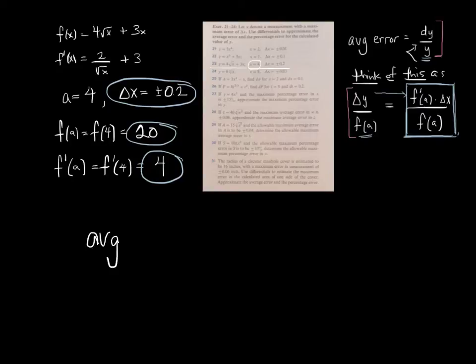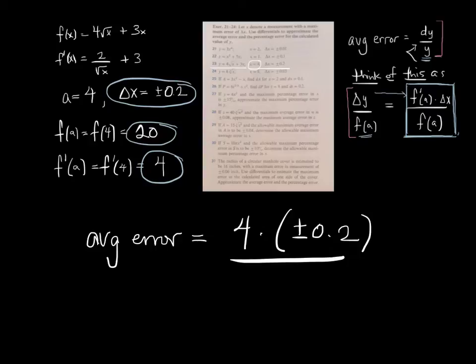Average error then. 4 times plus minus 0.2. Whoops. I'm getting ahead of myself. My brain did the multiplication. Anyway, 4 times plus minus 0.2. All of that divided by f of a, which is 20.